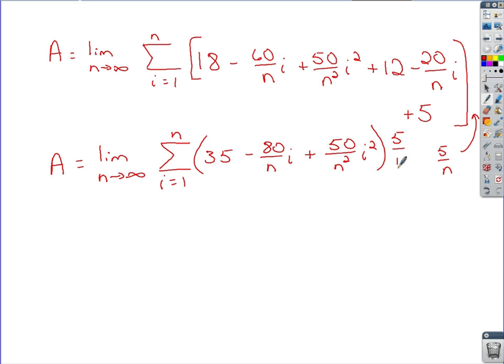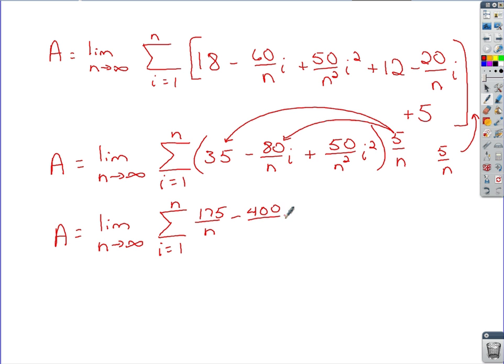That's a little bit better. We could take that and multiply by the 5 over n. So distribute the base through finally. 5 over n times 35 would be 175 over n. We've got 5 over n times the negative 80 over n i. That would be negative 400 over n i.